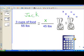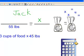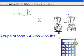There are many different ways to solve Jack's problem, but let's look at one using cross multiplication. I'm going to take my three cups of food. I'm going to multiply that times 45. It's going to be equal to 55 times my x.